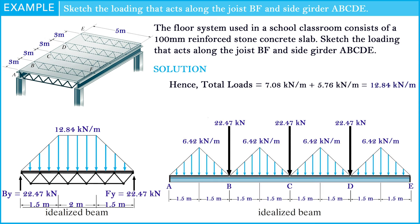Moving on to side girder ABCDE, the loads that this beam supports are the vertical reaction of the beam and triangular distribution loads. Here is the method we use to compute the result and sketch the loading that acts along the beam members.